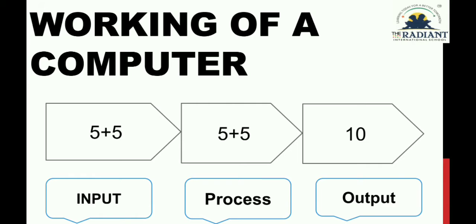Here is another example. There are two numbers for addition, so the two numbers are the data we give as input, and plus is the command or instruction we give to the computer. Then processing is done: 5 plus 5, and we get the answer 10, which is our output.